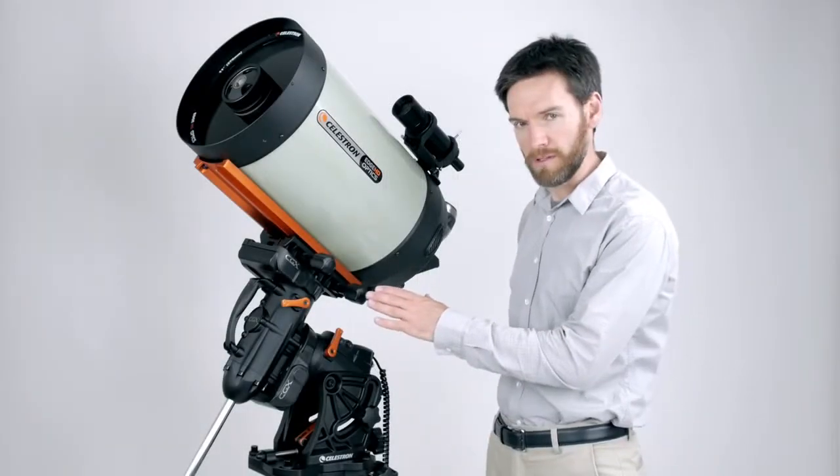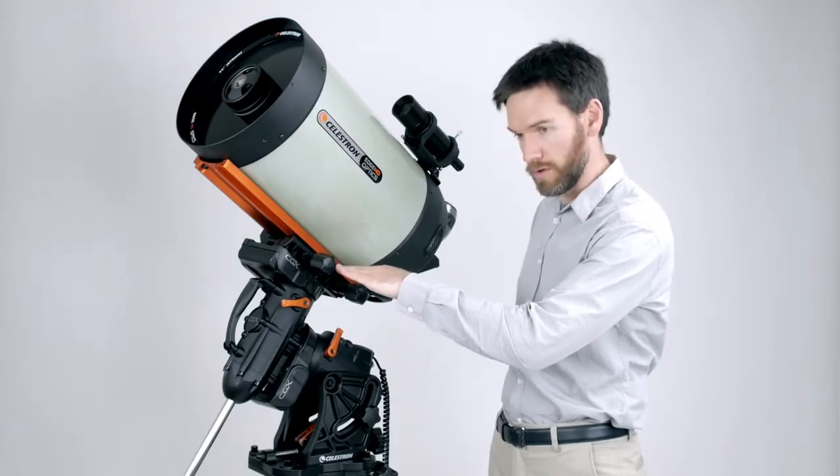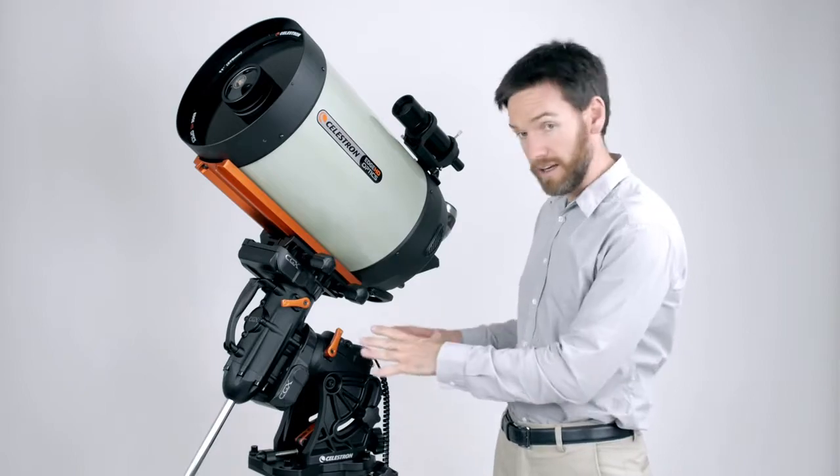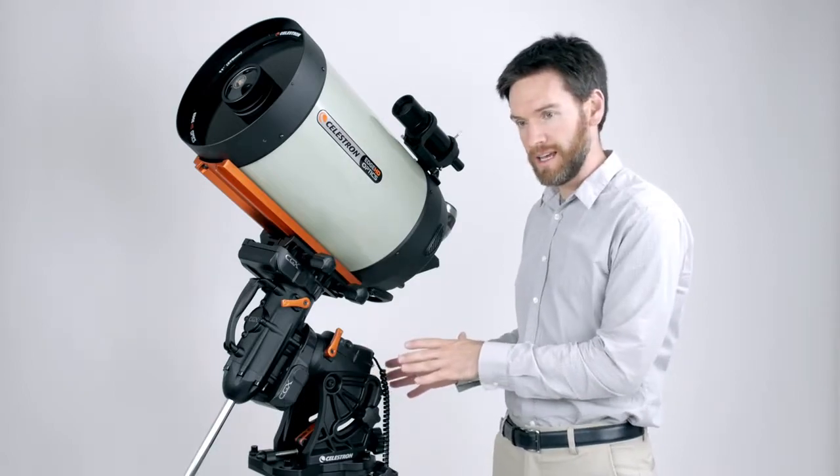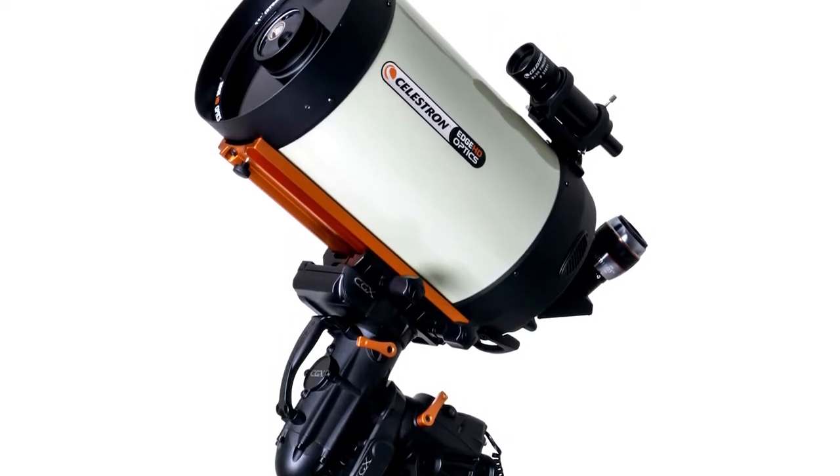The mount itself is much more compact and rigid. It actually sits a couple inches shorter than the CGEM mount did, and it is more rigid. As a result, it has a much higher load capacity. It will now support 55 pounds for a total payload.